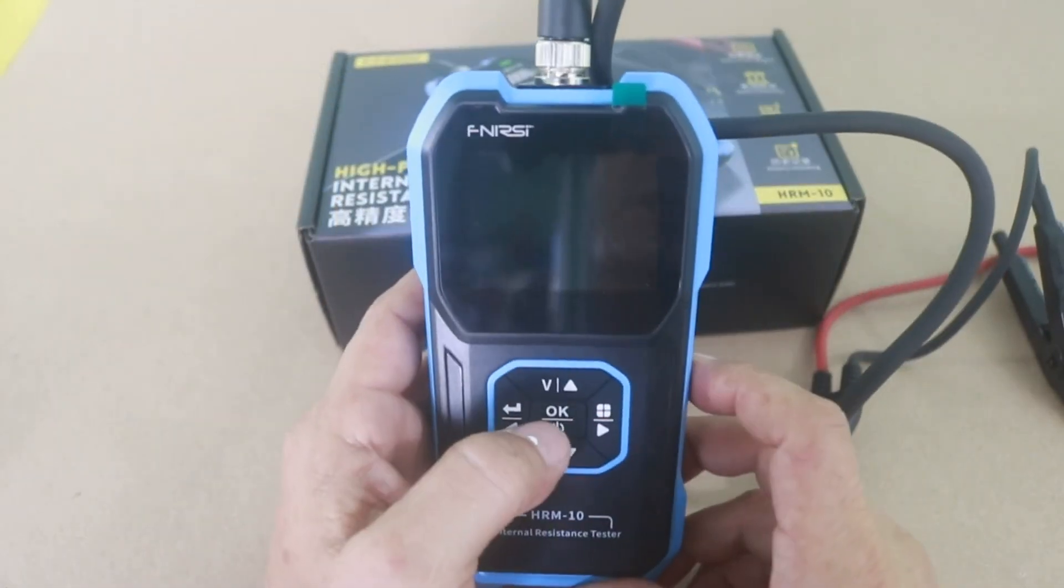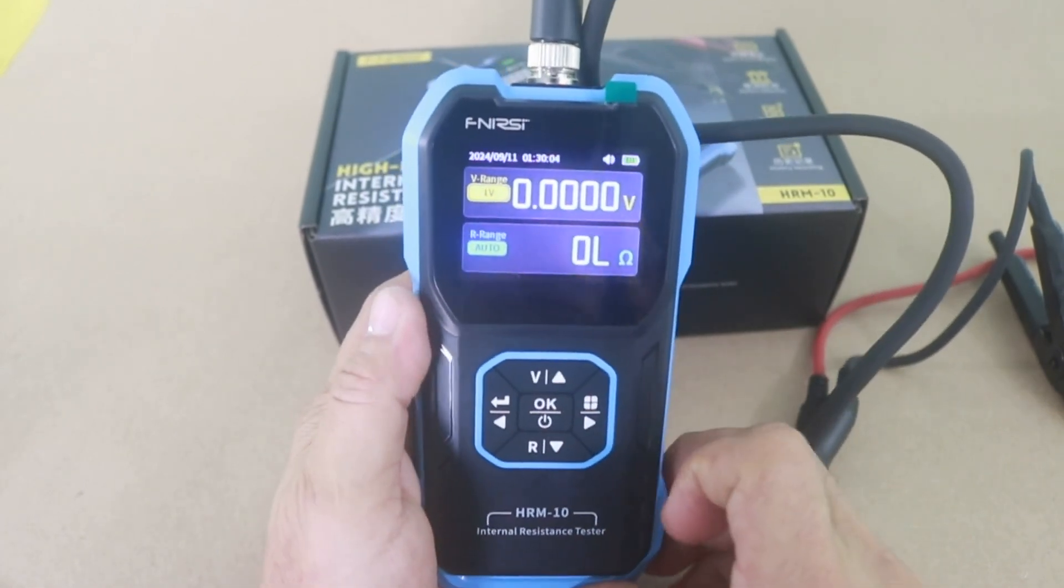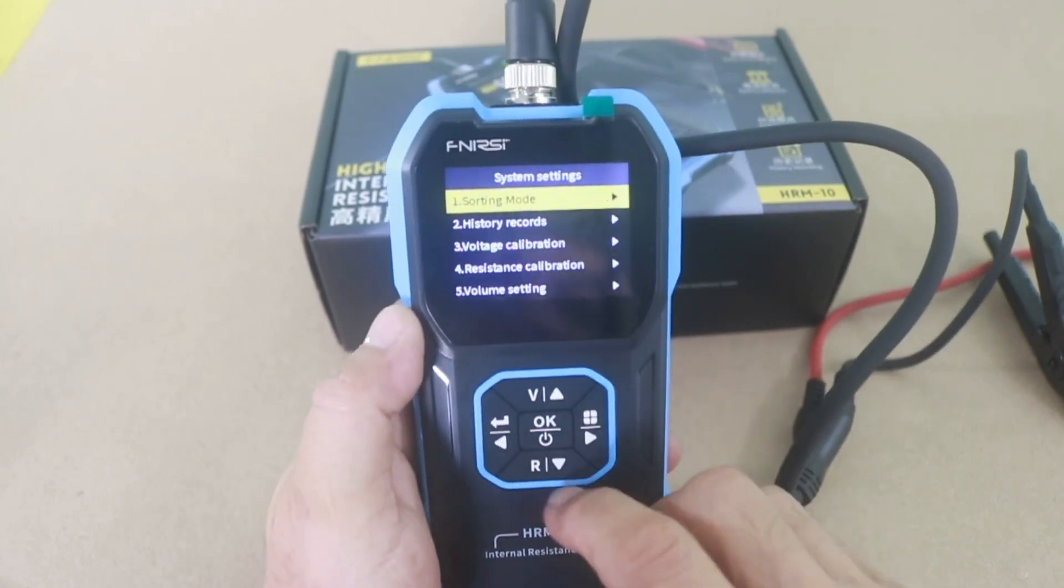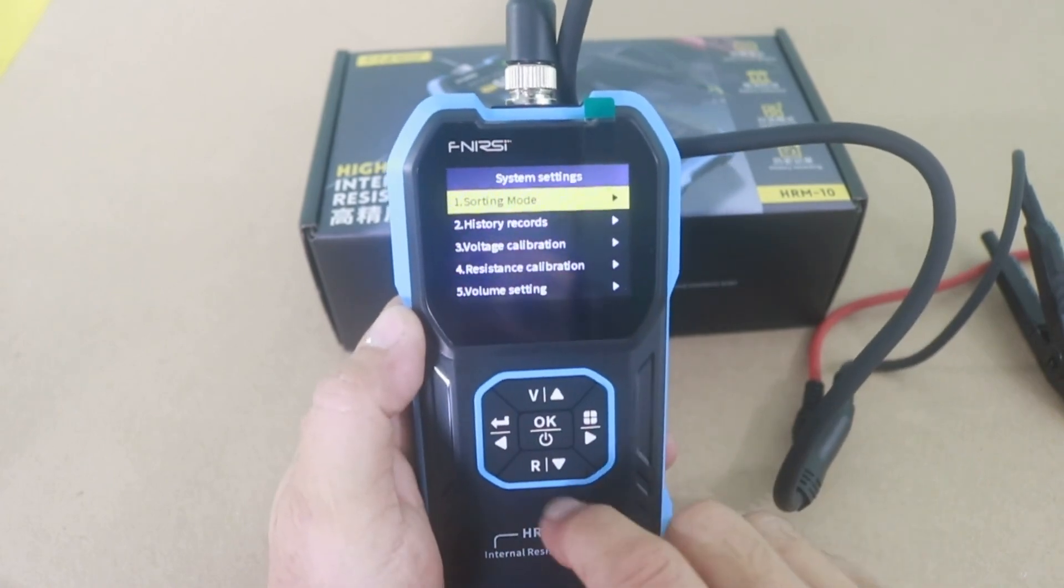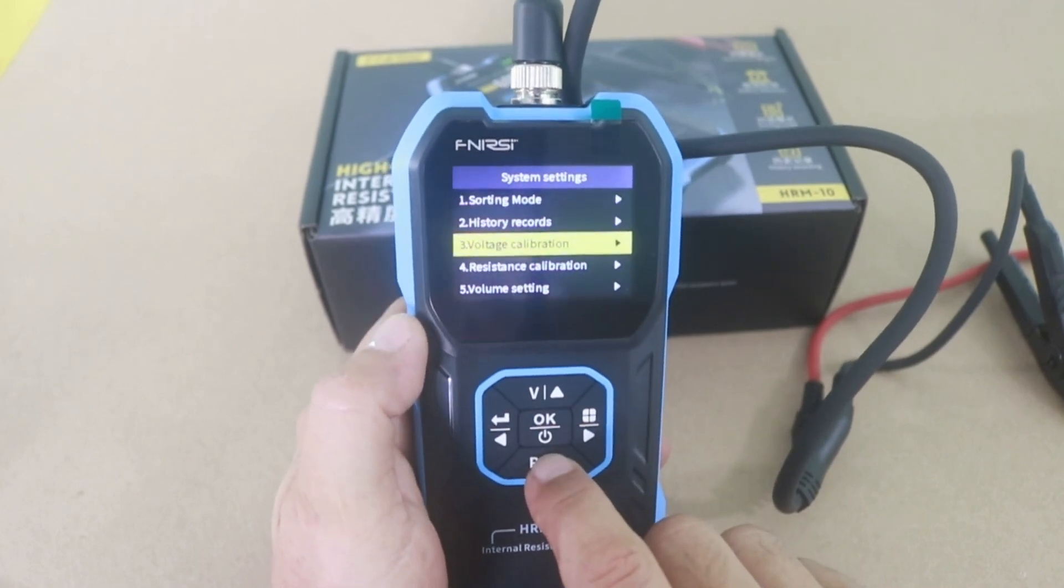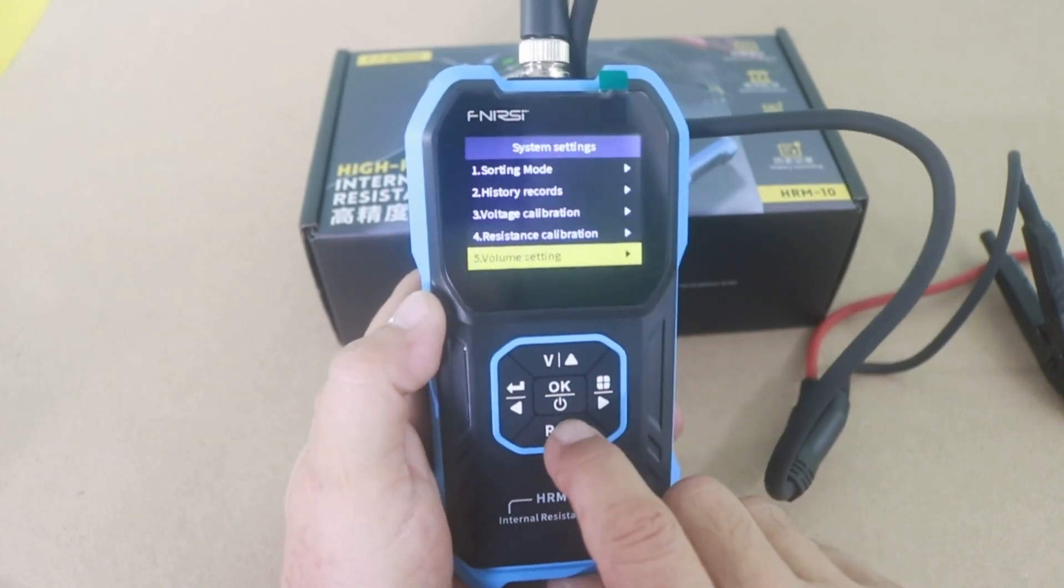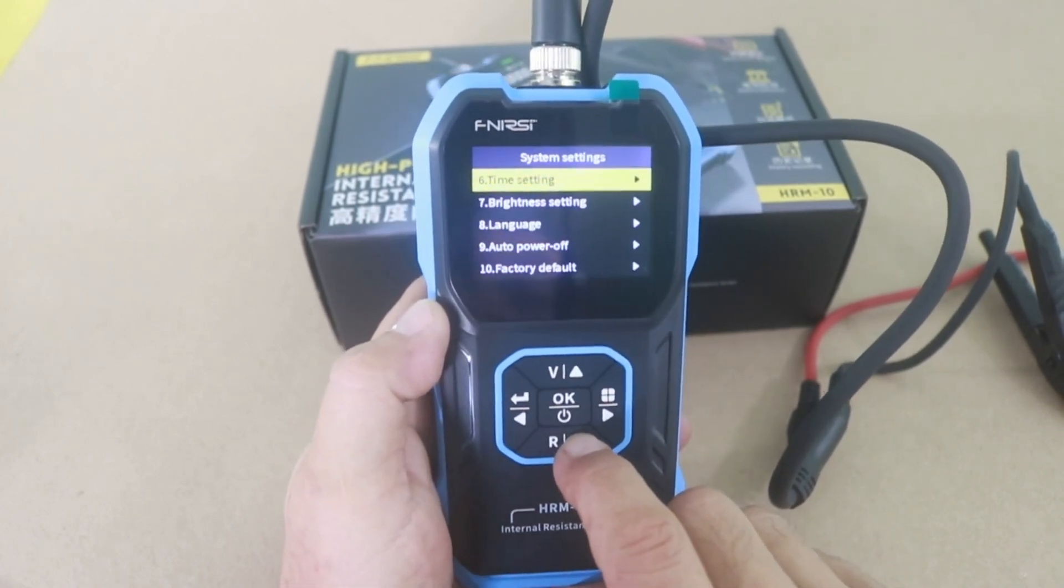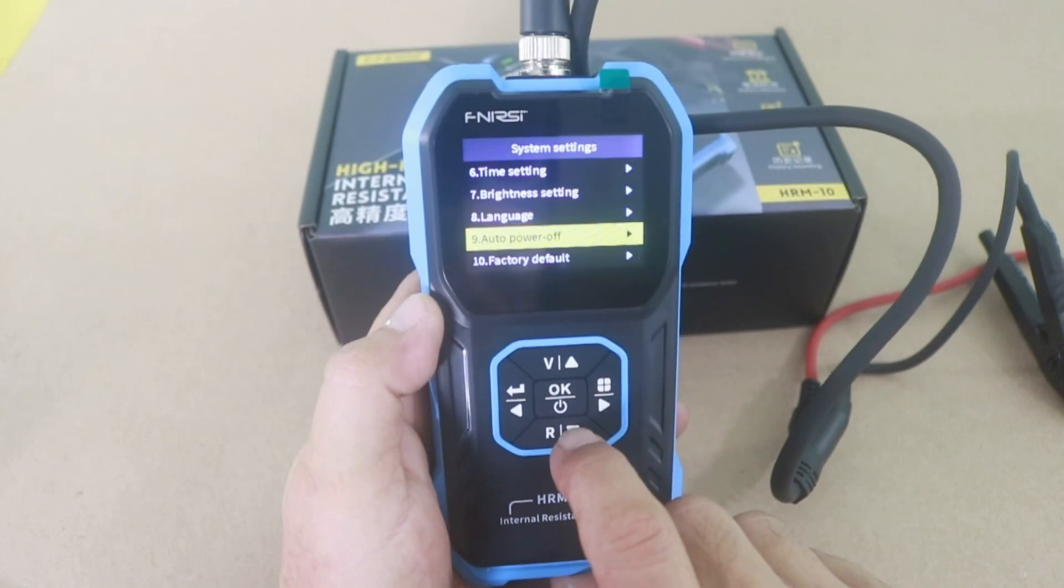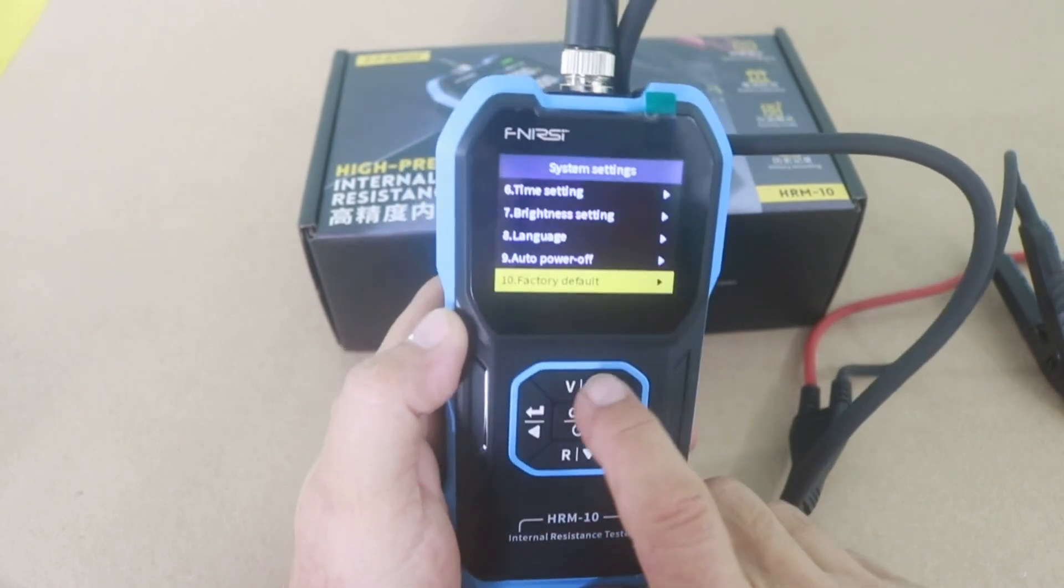Of course you have several different functions with this device. If you press here you will go to the menu. There is a sorting mode. We will talk about this. You can record the history of measurements. You can calibrate the voltage. Also calibrate the resistance. The volume of the audible signal. You can set it. Also the time and the brightness of the screen. You can set the language, auto power off, and return to factory defaults.